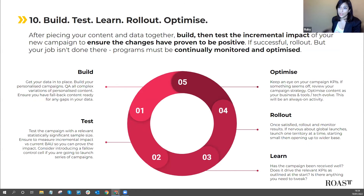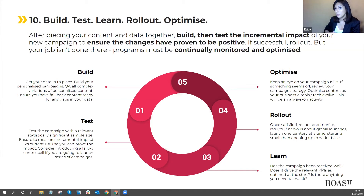Finally, build, test, learn, roll out, and optimise. After piecing your content and data together, build your campaign and test the incremental impact to ensure it's performing as intended with positive results. If it's been successful, roll it out — but your job won't be done there. You'll need to continuously monitor it, review it, tweak it if needed, and optimise it as you go.